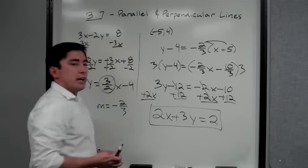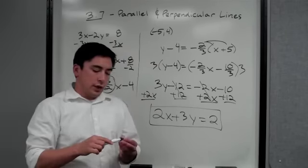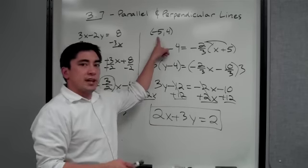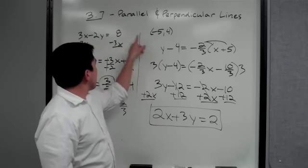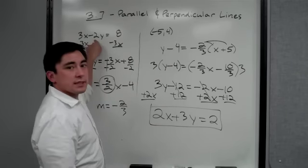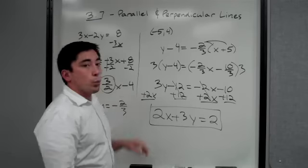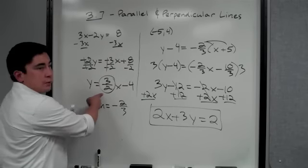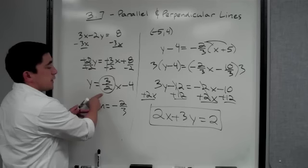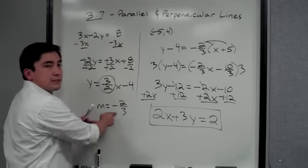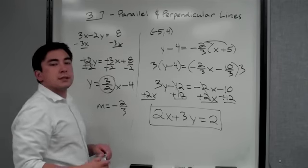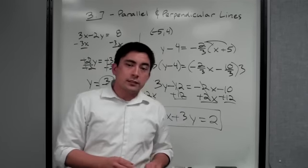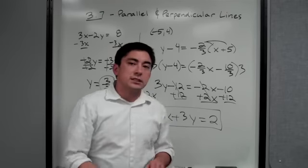So what did we find? We found the equation of a line that passes through negative five, four, and is perpendicular to the original line. We know it's perpendicular because if the original slope is three-halves, the perpendicular slope is negative two-thirds. I hope you watched that, because this was your homework assignment.